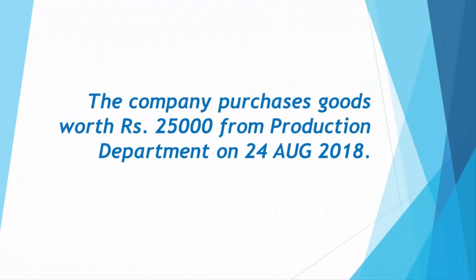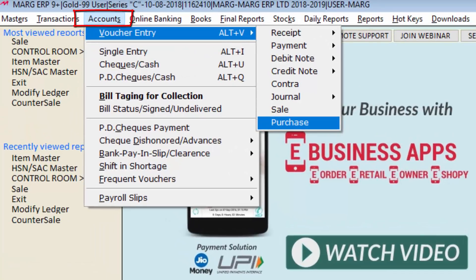In the same way, we will create a purchase voucher in two ways in this tutorial. You can see we have an example here: the company purchases goods worth rupees 25,000 from the production department on 24th August 2018. Following this example, we will implement purchase voucher with inclusive and exclusive tags in Mark software. Firstly, we will go to the accounts menu, then from voucher entry we will click on the purchase option.